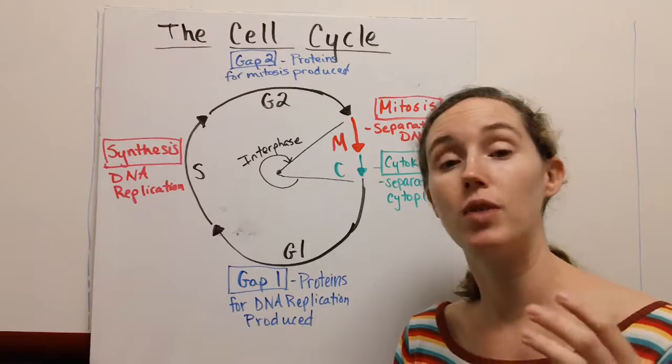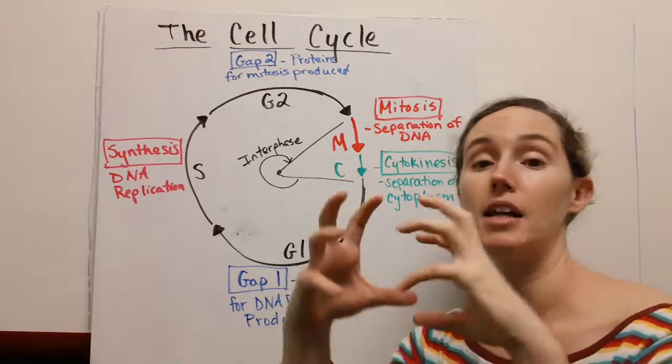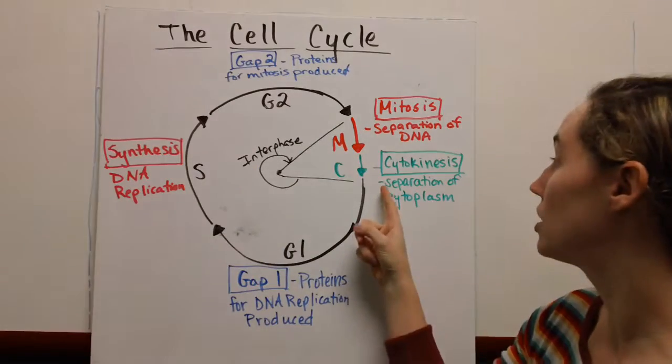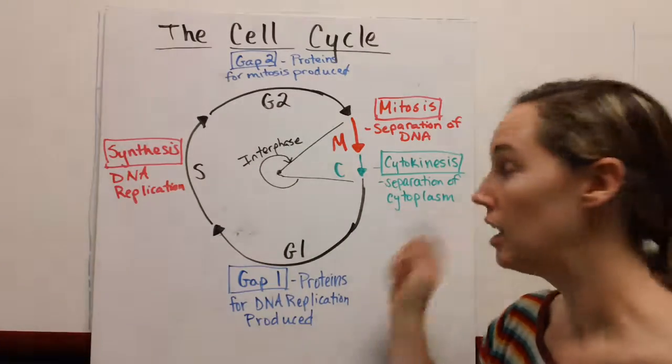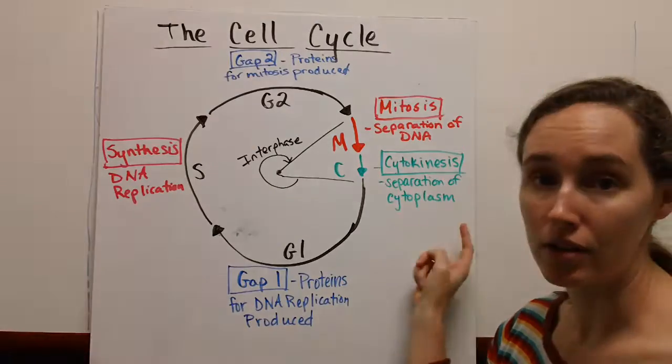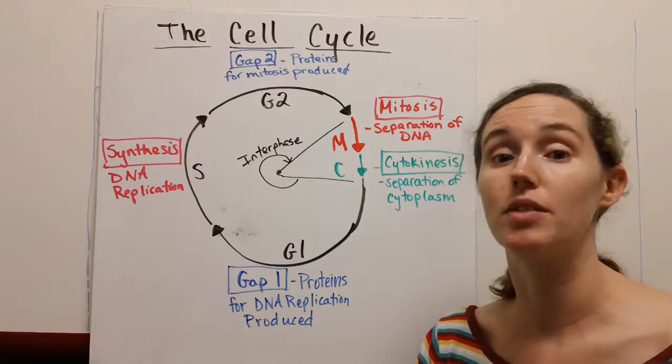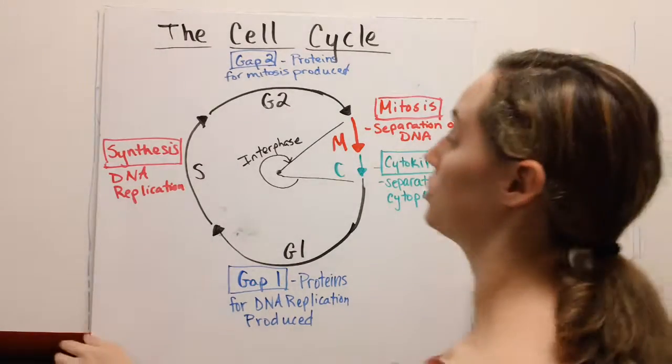Sometimes people call this whole process mitosis, but really mitosis is just this small part where we're separating the DNA. Then finally, once everything's replicated and it's being pulled apart, the cells pinch apart in a process called cytokinesis. This is when the cytoplasm actually separates. This cycle is very highly regulated, so it goes through a series of checkpoints.